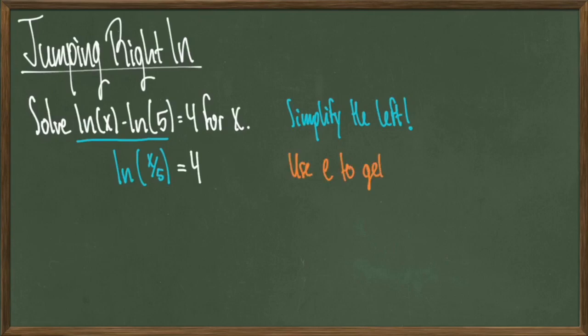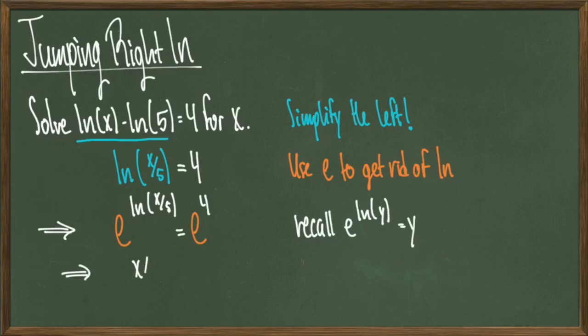Now we want to get rid of the natural logs so we'll lift both sides by the number e. In other words, e^(ln(x/5)) = e^4. Remember natural log is the log function with base e so the cancellation property occurs giving us x/5 = e^4, which simplifies down to x = 5e^4, and we're done.